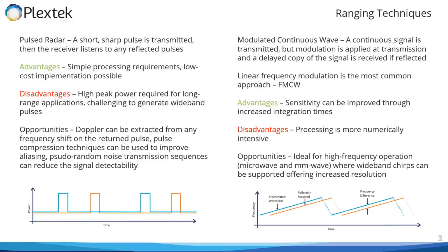Such as Frequency Modulated Continuous Wave, or FMCW. This is where we continuously transmit a signal which is modulated generally with a linear frequency ramp. This allows us to continuously receive any reflected signals and integrate over a longer time period, improving the signal-to-noise ratio or radar sensitivity without the need to transmit a particularly large signal as in pulse radar. However, unlike pulse systems, the range information is in the frequency domain, so we must transform the received signal from the time domain to the frequency domain, which is generally done with the Fast Fourier Transform. This is an additional processing step, but now that processing power is more readily available, it's not such a bad solution.